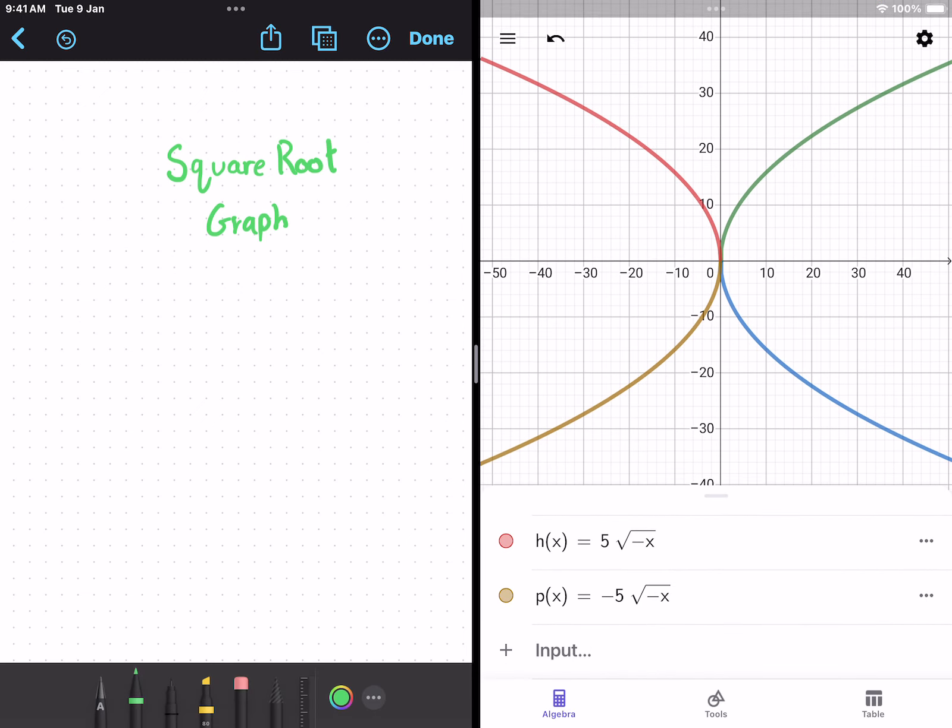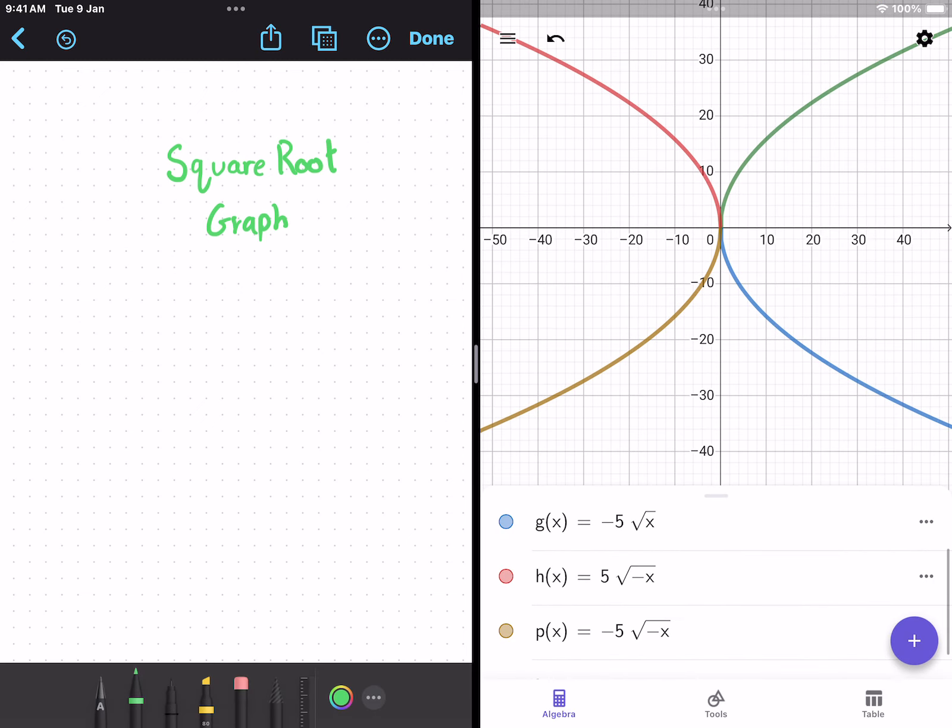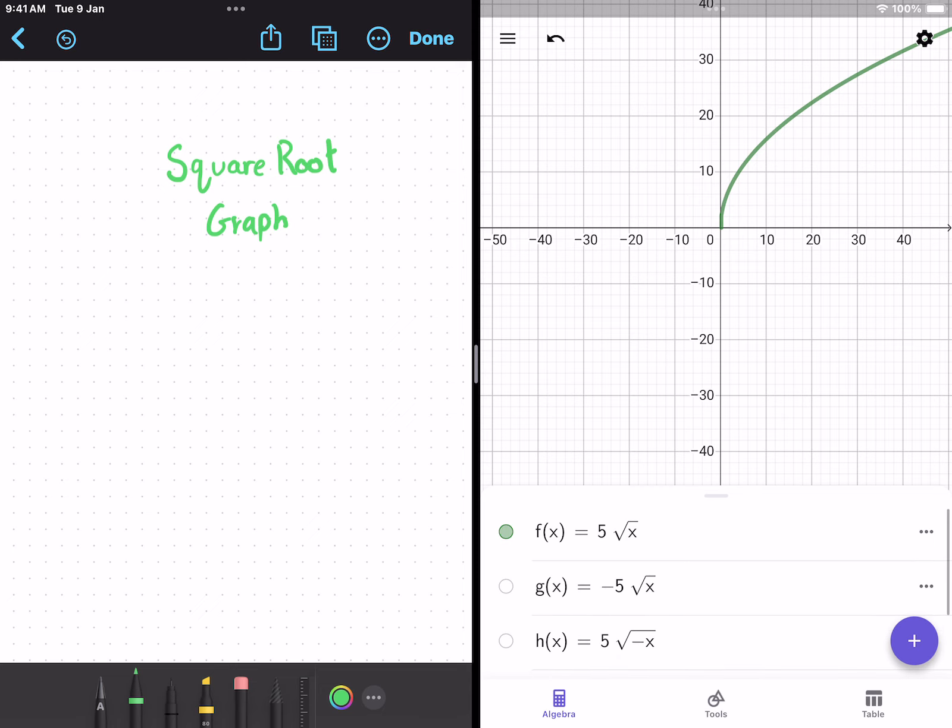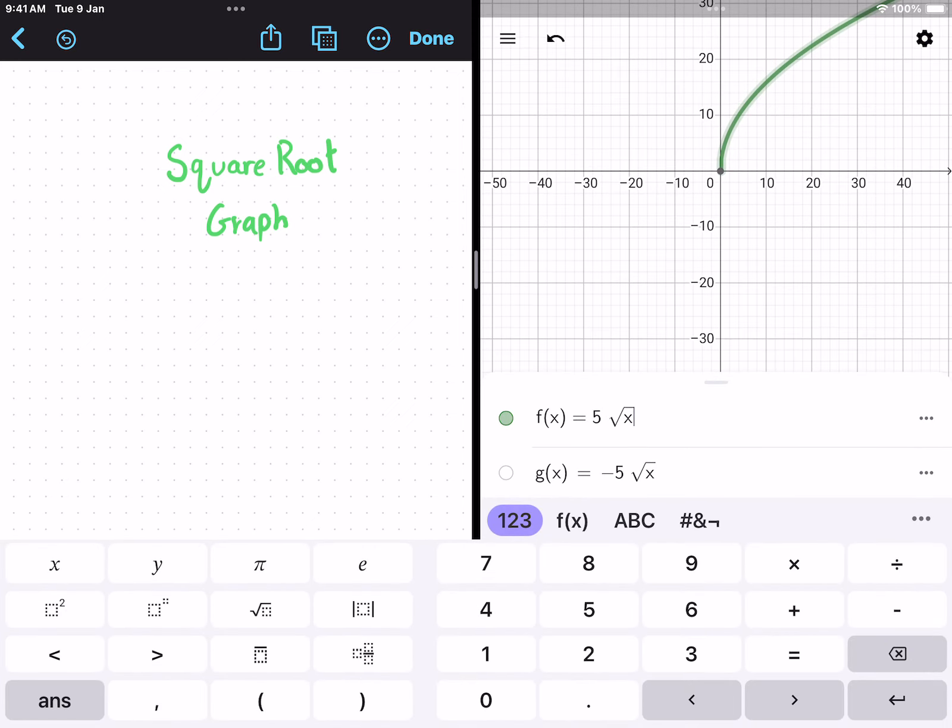Doesn't this kind of look like the Olympic colors? That's pretty cool. Anyway, let me show you how to translate the graph now. Let's begin with the first example. We've got 5 root x, and what if we wanted to move this to the left or right?